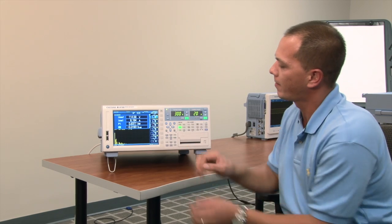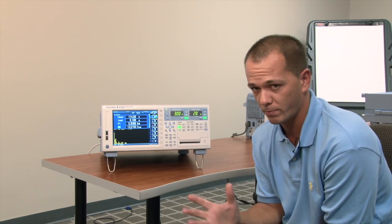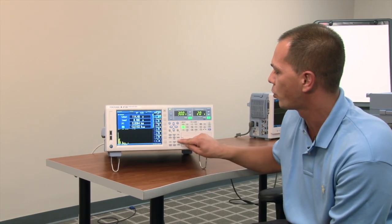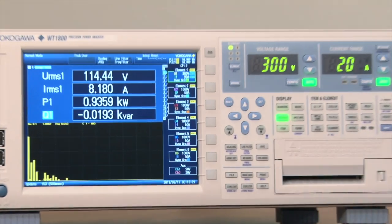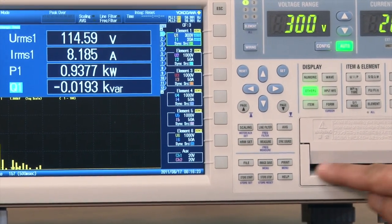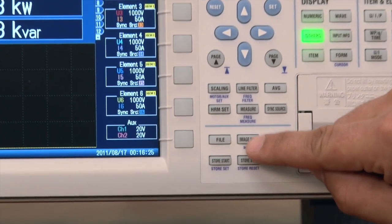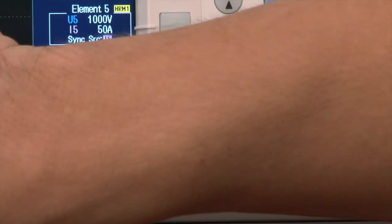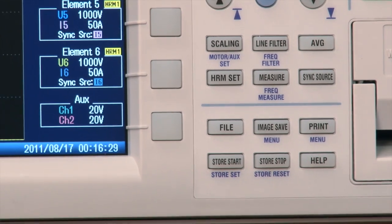Once you've captured the data that you hope to measure, you can then have your choice of different ways of taking the data off. You can do everything from print to paper from the front panel, or you can choose to save the image to a USB stick which I just happen to have in my pocket.